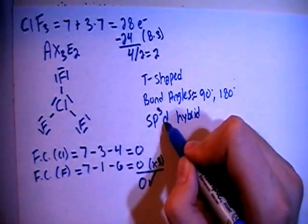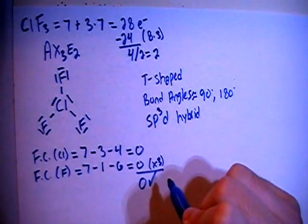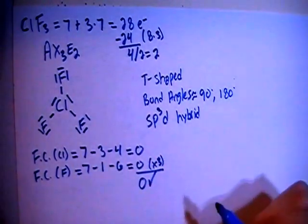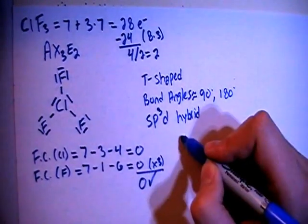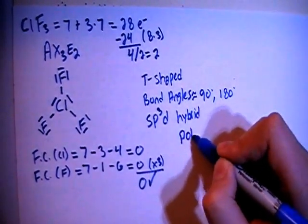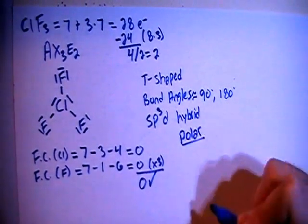So 1 s, 3 p's, 1 d for a total of 5 hybrid orbitals to match the 5 electron groups. And because of these 2 non-bonding pairs, that is going to make this overall a polar compound.